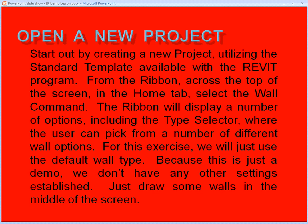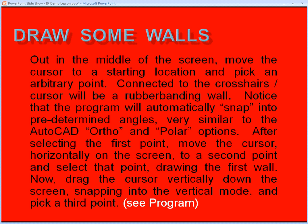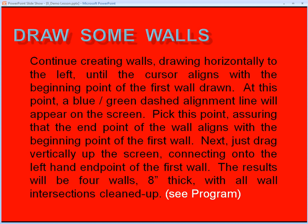Just draw some walls in the middle of the screen. Move the cursor to a starting location and pick an arbitrary point. Connected to the crosshairs will be a rubber bending wall. Notice that the program will automatically snap into predetermined angles, very similar to the AutoCAD Ortho and Polar options. After selecting the first point, move the cursor horizontally on the screen to a second point and select that point, drawing the first wall. Now drag the cursor vertically down the screen, snapping into the vertical mode, and pick a third point. Continue creating walls drawing horizontally to the left until the cursor aligns with the beginning point of the first wall drawn.